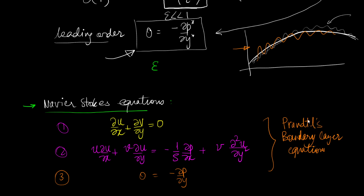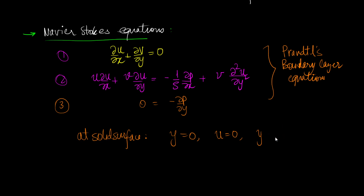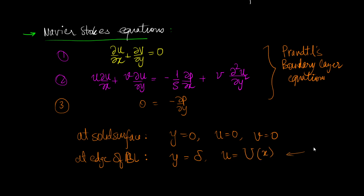What are the boundary conditions? At the solid surface, that is at y = 0, u = 0 and v = 0. At the edge of the boundary layer, that is at y = delta, u becomes equal to the free stream velocity.